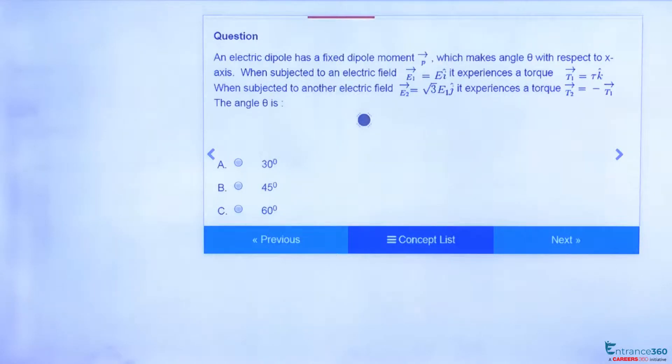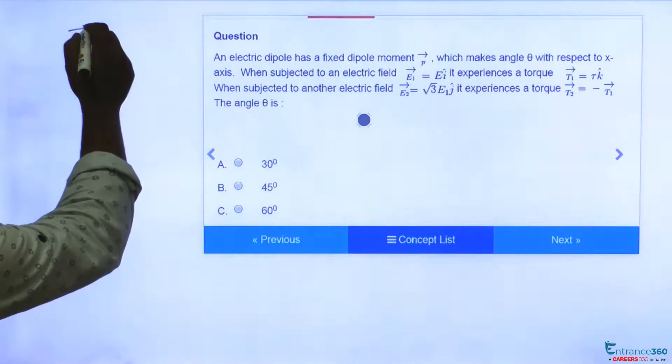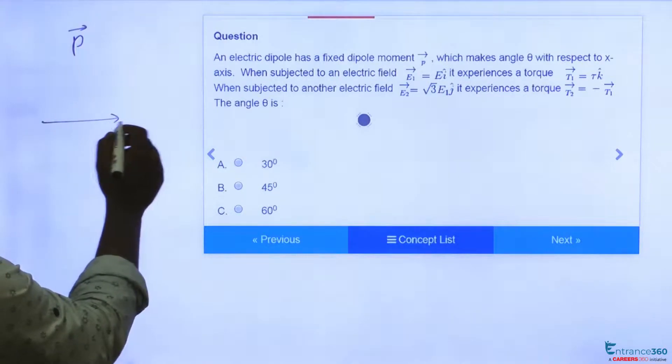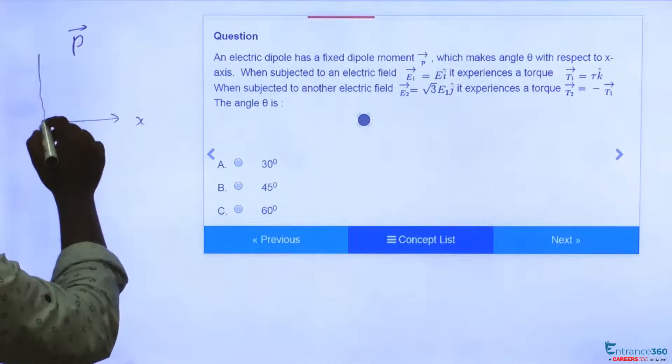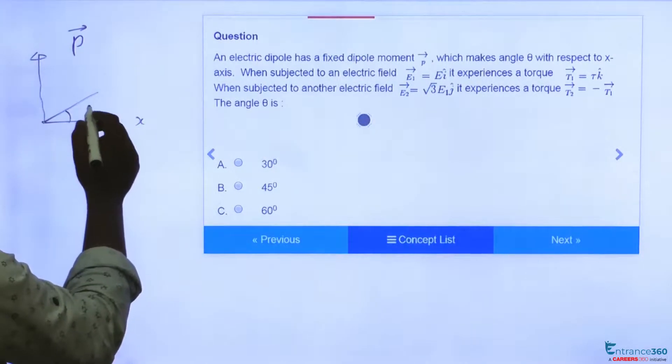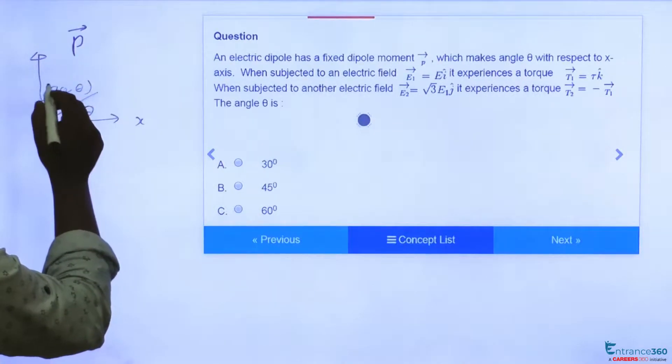The question says we have an electric dipole having dipole moment equal to P and this dipole makes angle theta with respect to x-axis. Let's suppose this is x and this is y. So this dipole makes angle theta with x-axis, which means it will make 90 minus theta with y-axis.